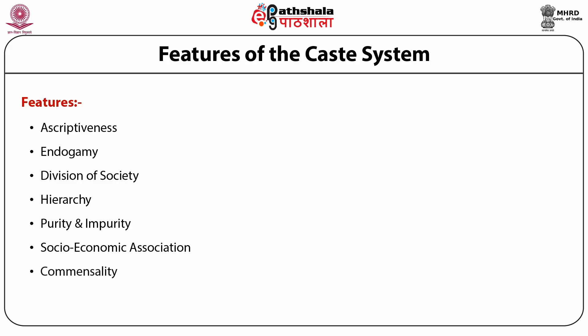Commensality: castes placed restrictions on eating and drinking with members of other castes. Actions like accepting food and drink took on a pure or impure caste value depending on the caste of the person within the hierarchical system. The commensality restrictions on a caste were usually an indicator of how they ranked in the social hierarchy.